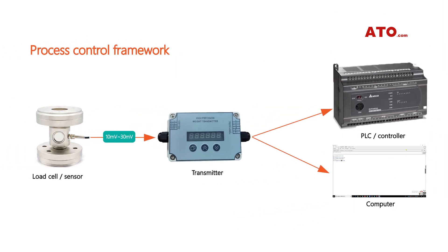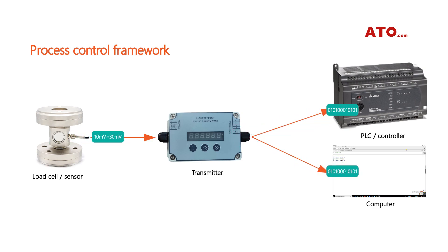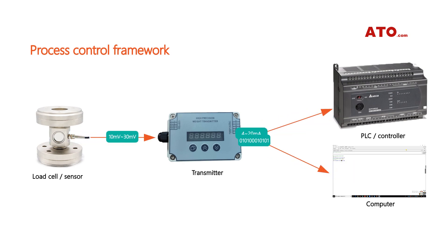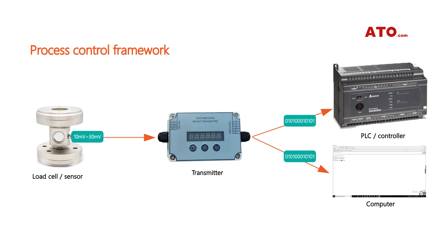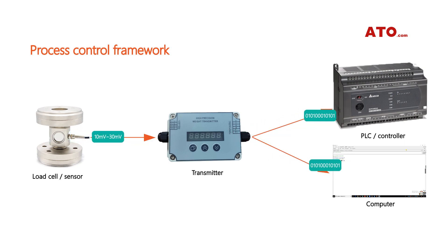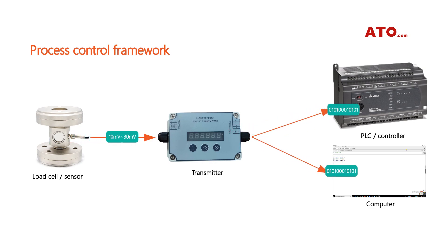The load cell transmits the millivolt signal to the transmitter. Then the transmitter converts the millivolt signal into a 4 to 20 mA standard current signal or digital signal and sends it to the PLC or computer. The computer or PLC communicates with the transmitter through the Modbus protocol and translates the digital signal into a decimal number that can be recognized.